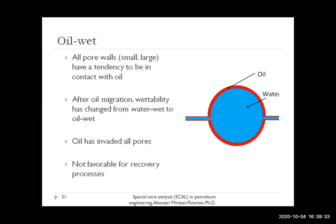The second type is oil-wet. In oil-wet systems, all pore walls — either small or large — have a tendency to be in contact with oil. As I said, reservoir rock is originally water-wet; after oil migration, oil changes the wettability from water-wet to oil-wet by invading all pores. This is usually unfavorable for recovery processes because the relative permeability in these systems is low, causing a low rate of oil recovery. Also, residual oil saturations in these systems can be high.